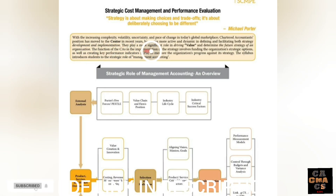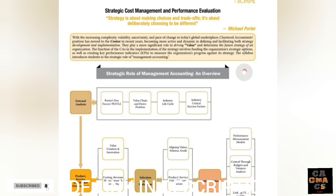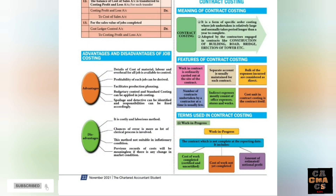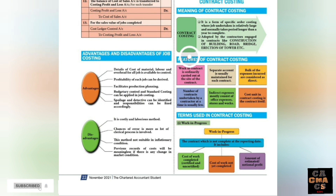For CA Final students, ICAI has provided summary notes and charts for Strategic Cost Management and Performance Evaluation, along with some important questions. For CA Intermediate, they have chosen some chapters on Contract Costing subject.